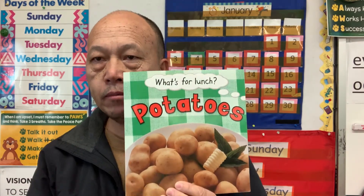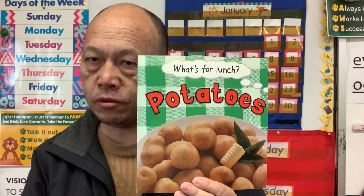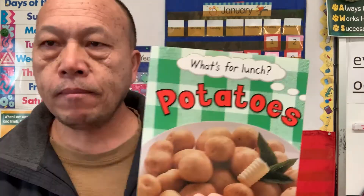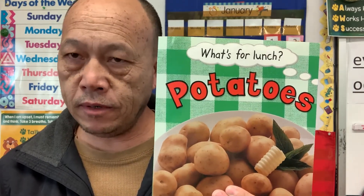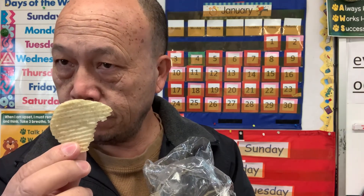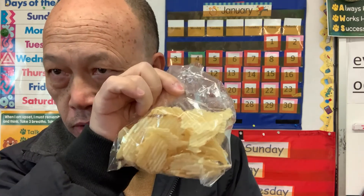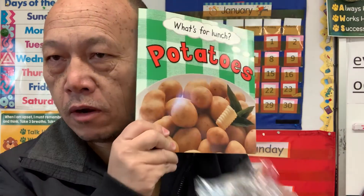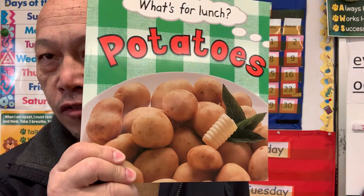Potato. Remember earlier when we talked about vegetables — potato is one of the vegetables. I hope the potato is one of your favorite vegetables, because if you love to eat these, you should say that potato is one of your favorite vegetables. Because they make chips from potato. See how good they taste? Very crunchy, a little bit salty, but it's a good source of snack. You like chips, then potato is your favorite vegetable.